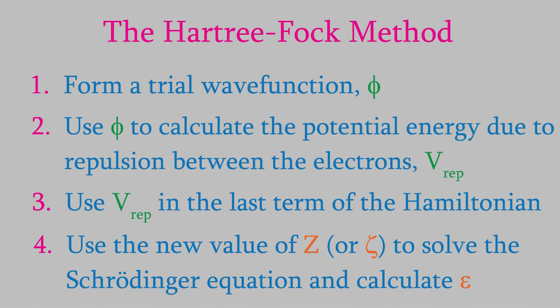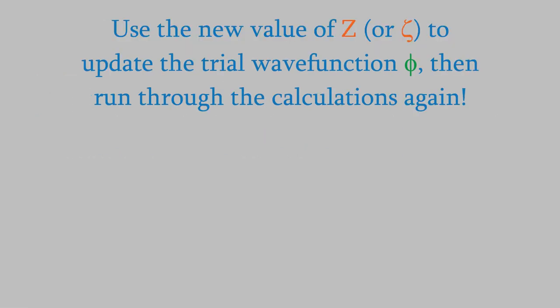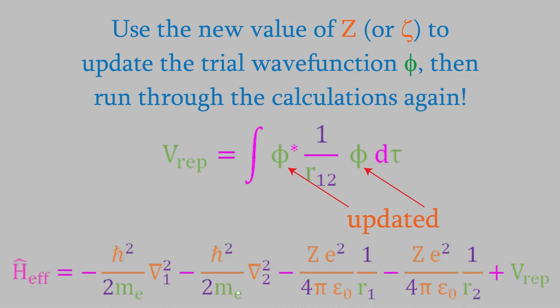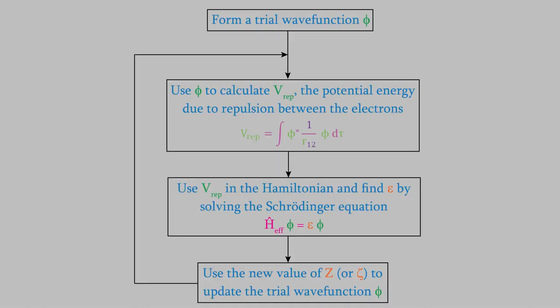Since we now have a slightly better value of z in our trial wave function, we can repeat that whole set of calculations. We'll use the new wave function in the integral we used to find the potential energy due to repulsion. Since the trial wave function is now better, the energy we calculate will be more accurate. When we plug that energy into the Hamiltonian, that'll make the Hamiltonian more accurate too, and so on. So the Hartree-Fock method consists of a cycle or loop of calculations.